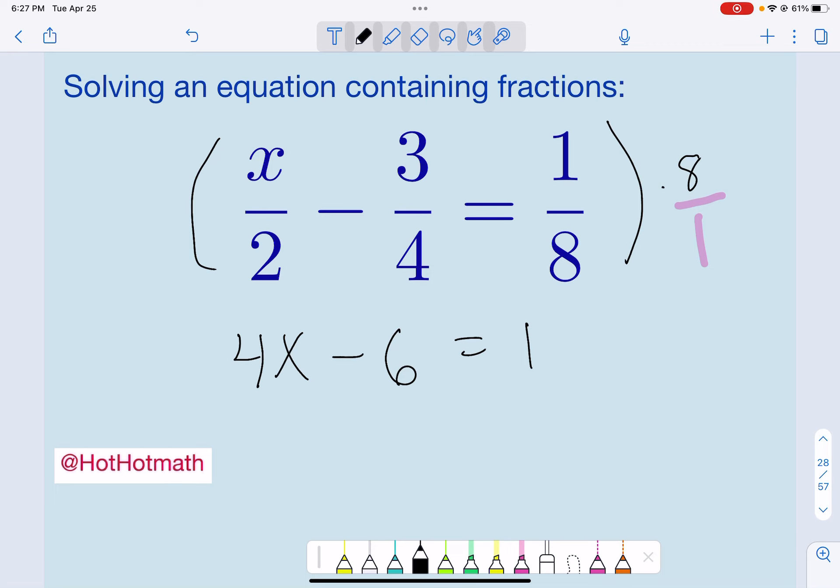Well, we're going to add 6 to both sides. We get that 4x is equal to 7. And then we're going to divide by 4. So that would be 7 over 4.